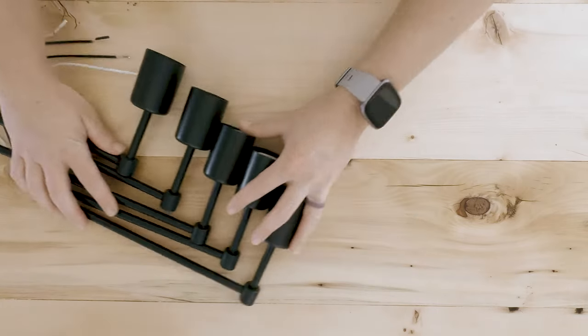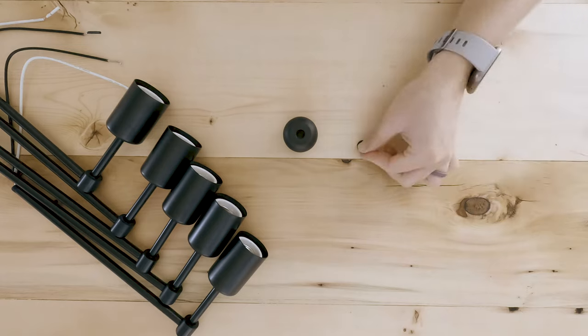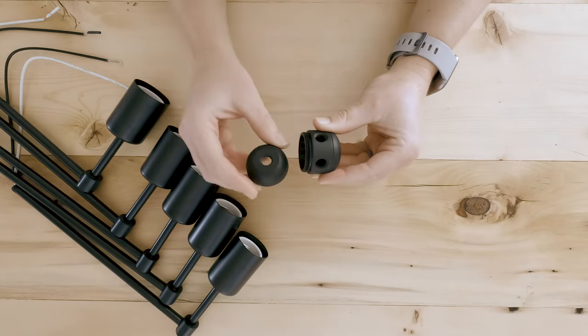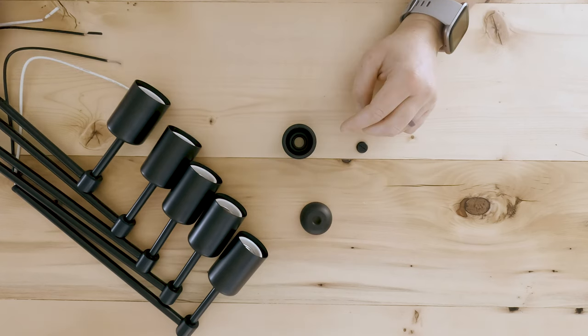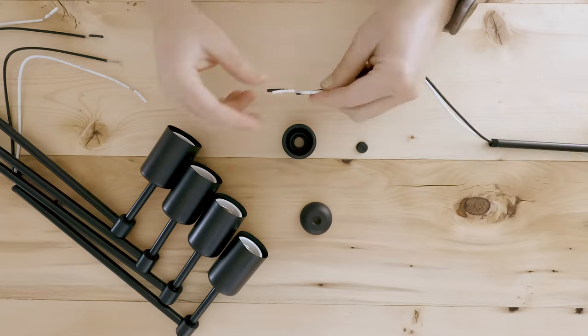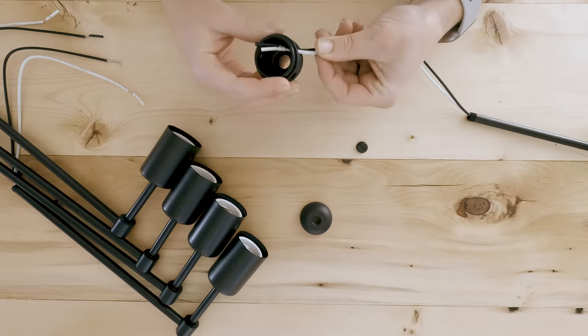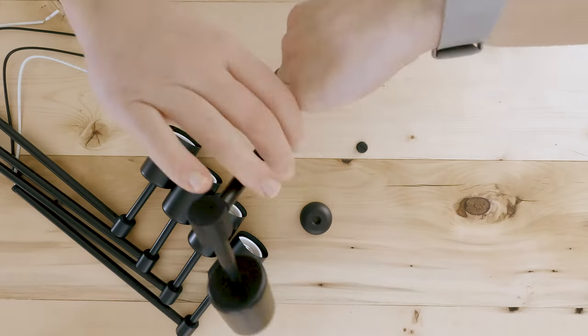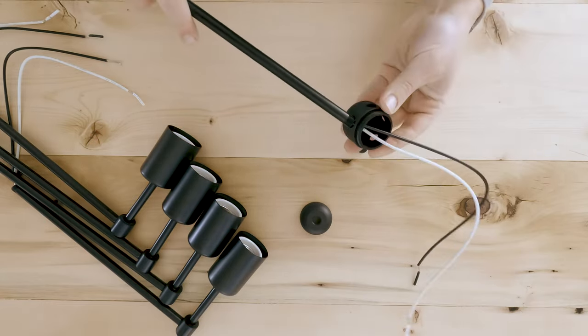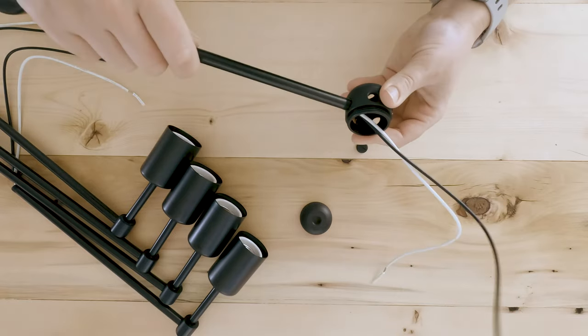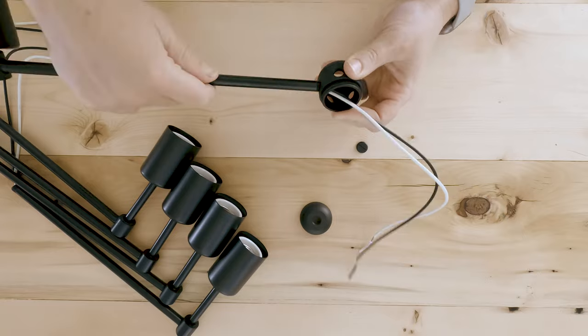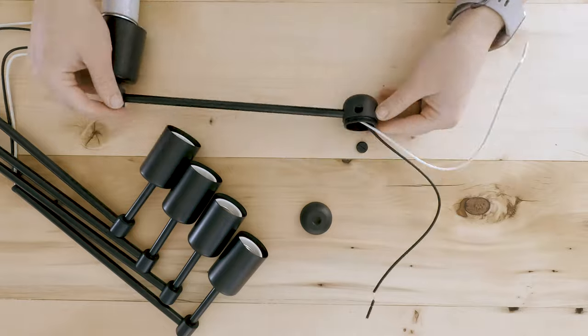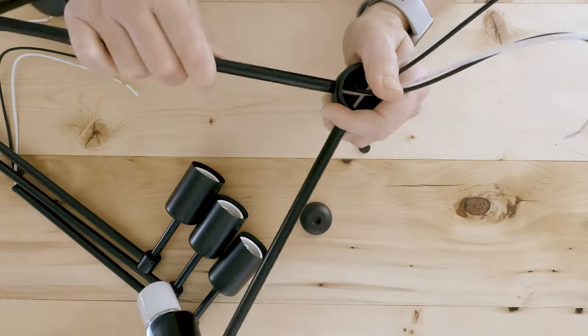To attach the arms together, you will use the cluster body. Start by detaching the bottom and top of the cluster body by unscrewing the pieces. Take one arm and feed the wire of this arm through one of the side holes of the cluster body. Attach the arm to the body by threading the pipe to the body. Continue attaching the arms to the cluster body the same way.